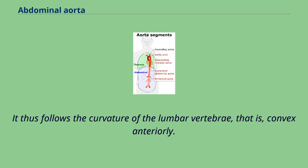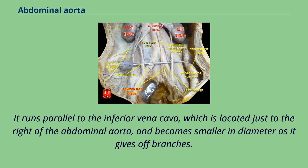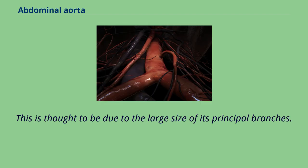It follows the curvature of the lumbar vertebrae — that is, convex anteriorly. The peak of this convexity is at the level of the third lumbar vertebra. It runs parallel to the inferior vena cava, which is located just to the right of the abdominal aorta, and becomes smaller in diameter as it gives off branches. This is thought to be due to the large size of its principal branches.